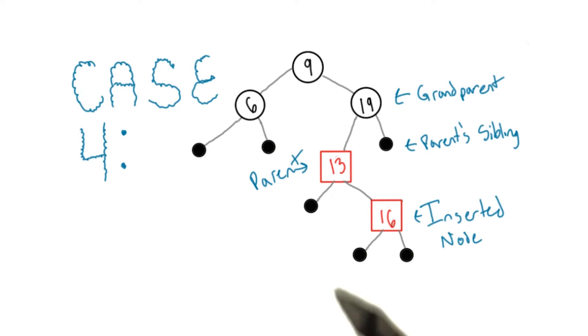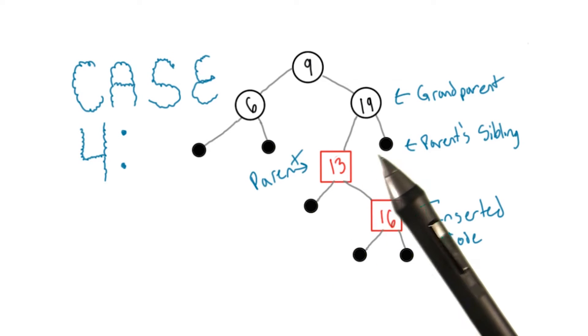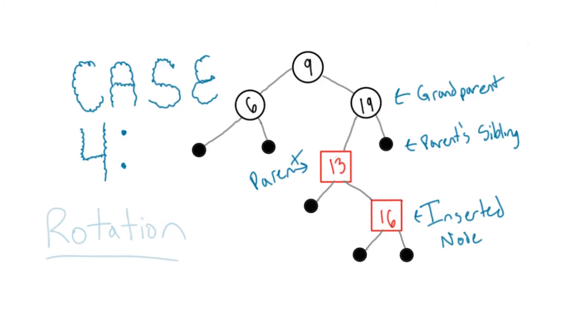In cases 4 and 5, your node's parent is red and its sibling is black. In both, you'll need to perform a rotation.